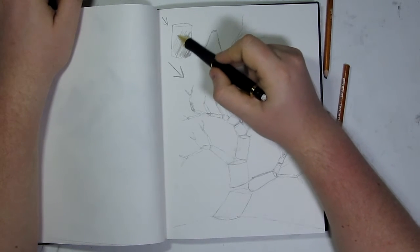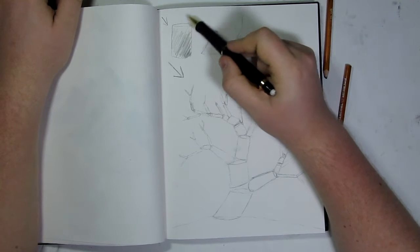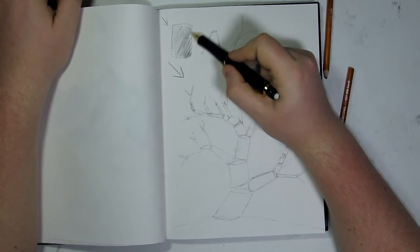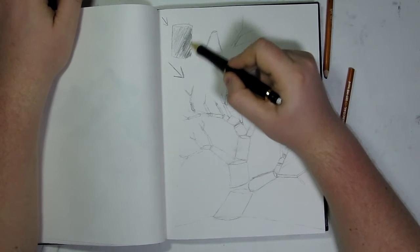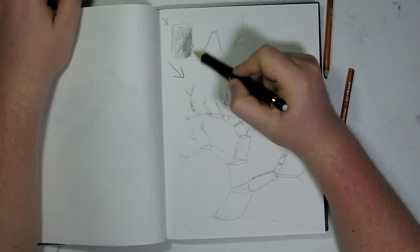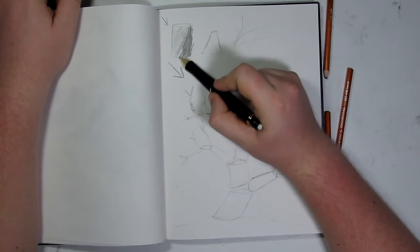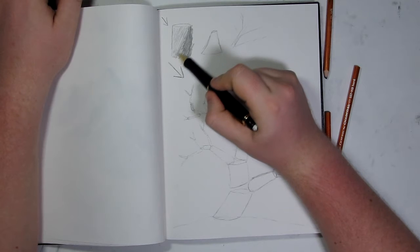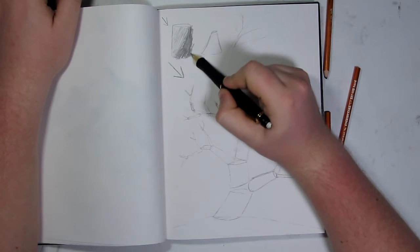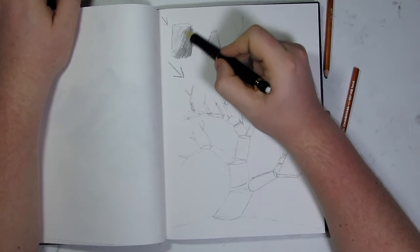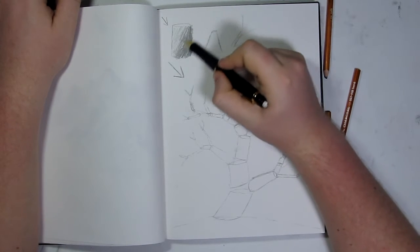I'm going to make this side darker, just like that. So that's how you would shade if the light was coming from that direction.